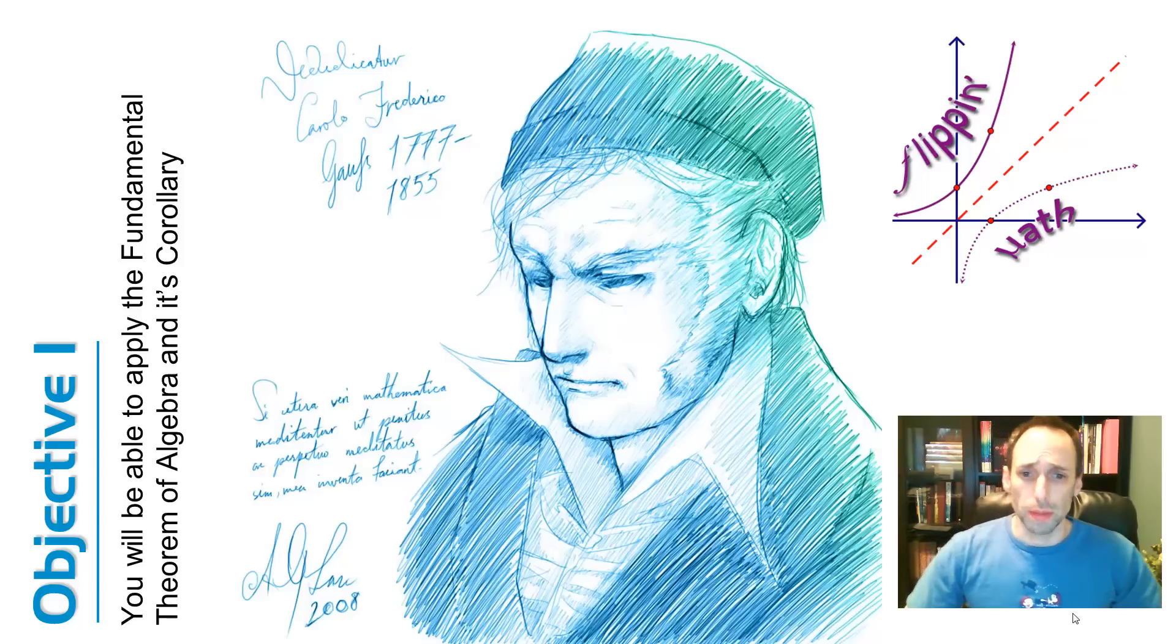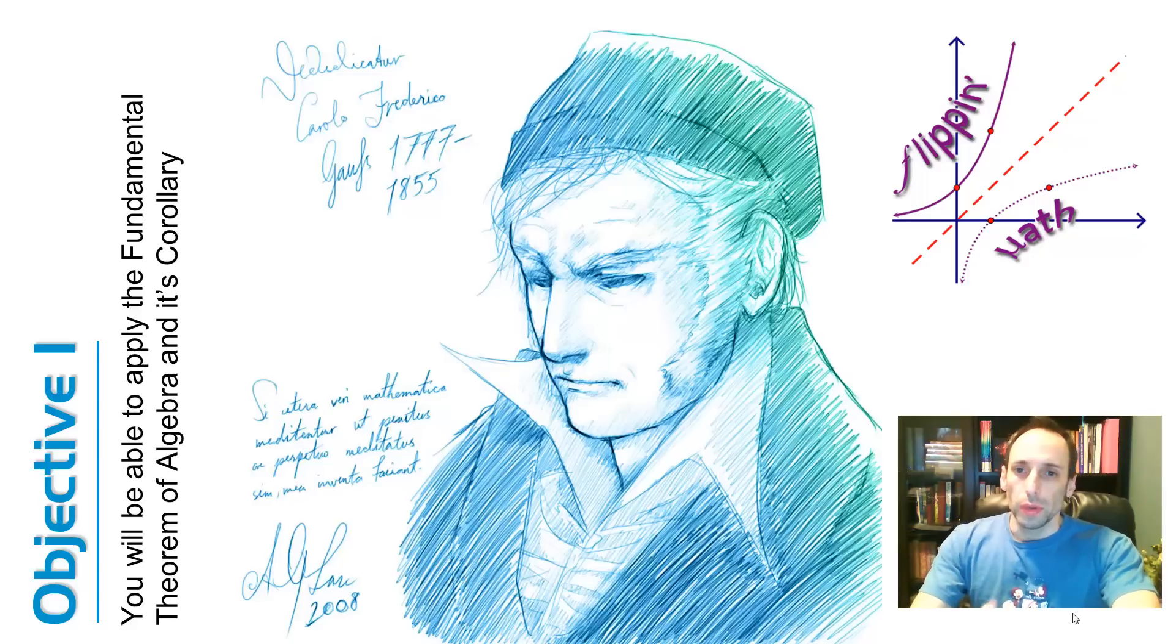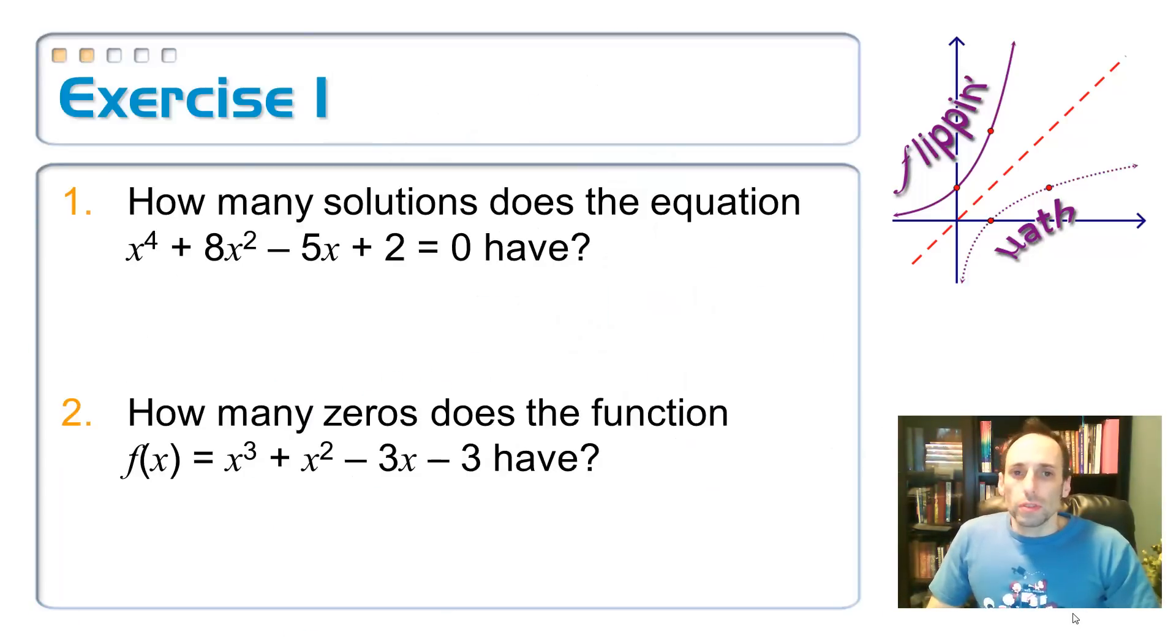So first objective is the fundamental theorem of algebra, being able to apply it and its corollary. So in the picture there is a sketch of this mathematician named Gauss and Gauss is pretty famous for looking very dramatic as you can see in that picture. And he was a pretty smart guy. So you can see the dates there, 1777, 1855, so he's been dead for a bit. So his picture is on here because he is the first one to prove the fundamental theorem of algebra. So let's lead up to that, starting with this.